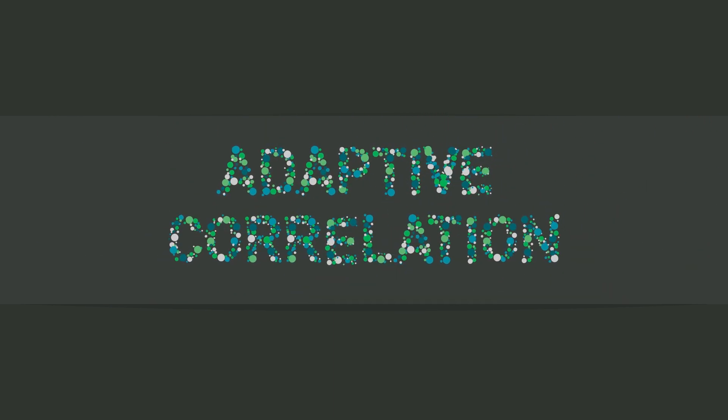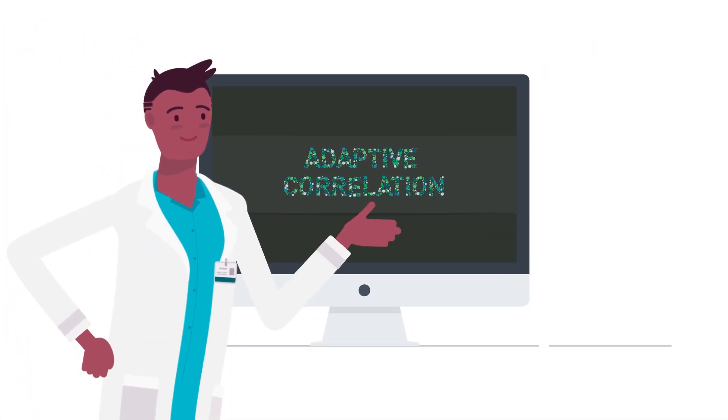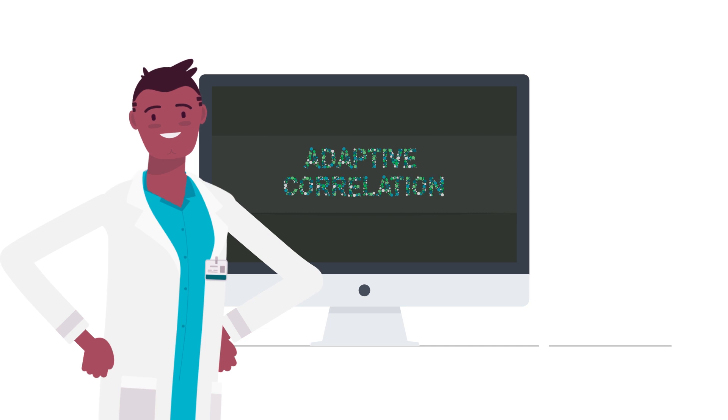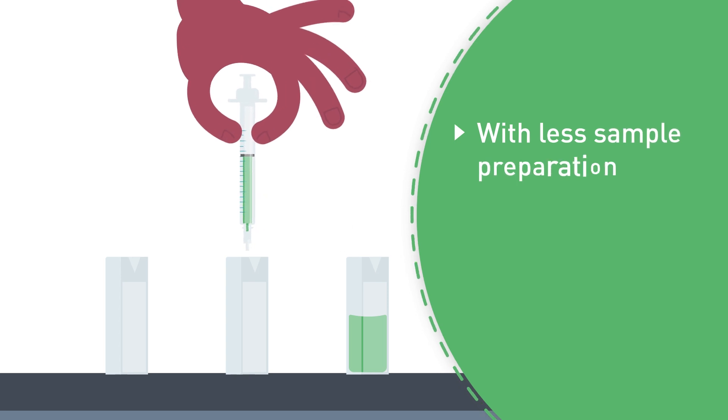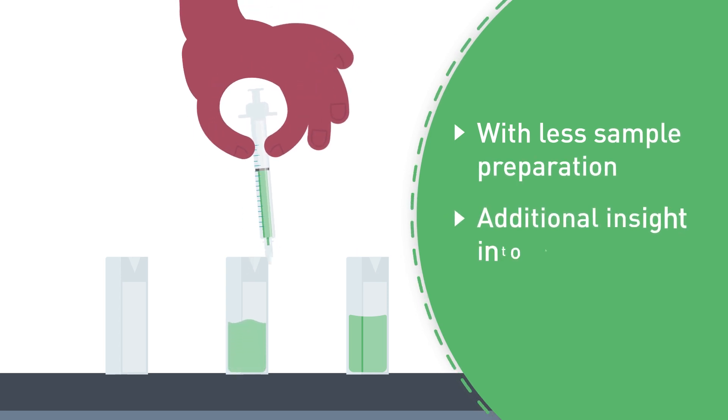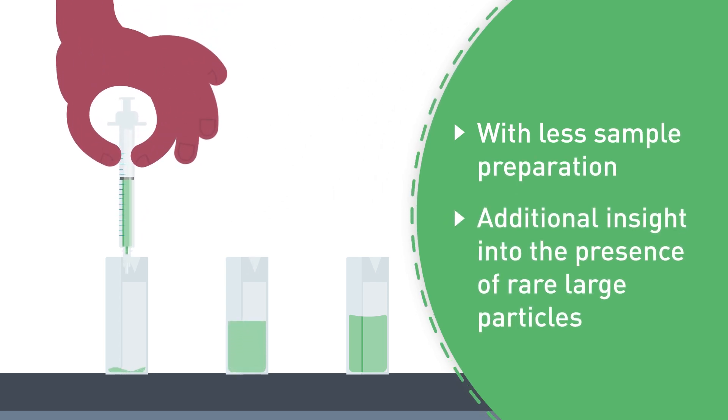Now there's a new way: adaptive correlation. Adaptive correlation allows scientists to accurately characterize samples quickly, confidently, and precisely, with less sample preparation, and brings additional insight into the presence of rare large particles.